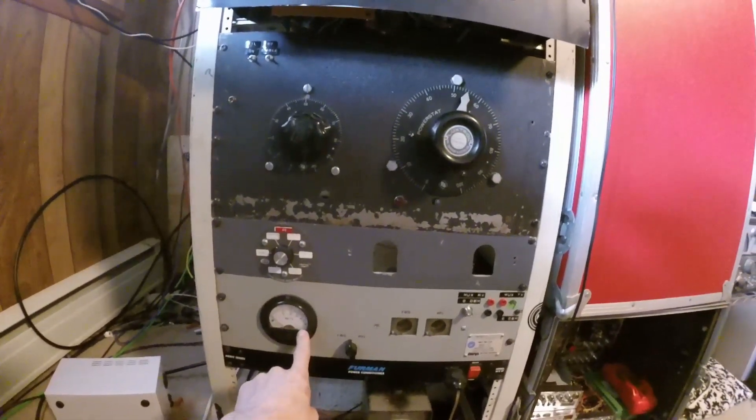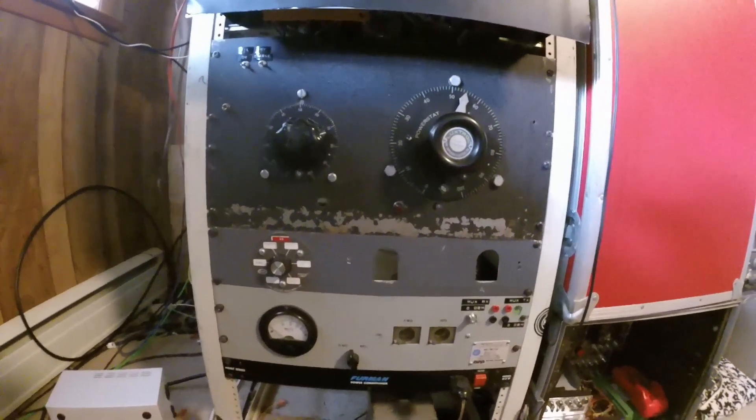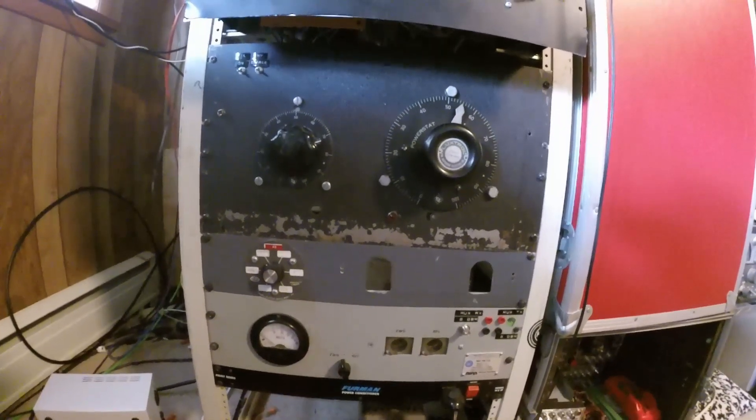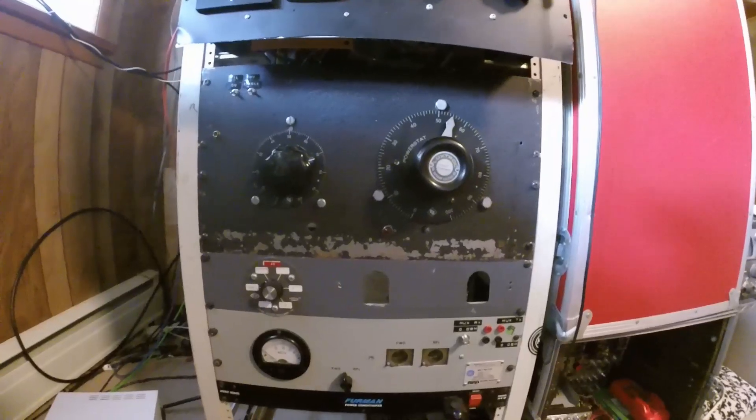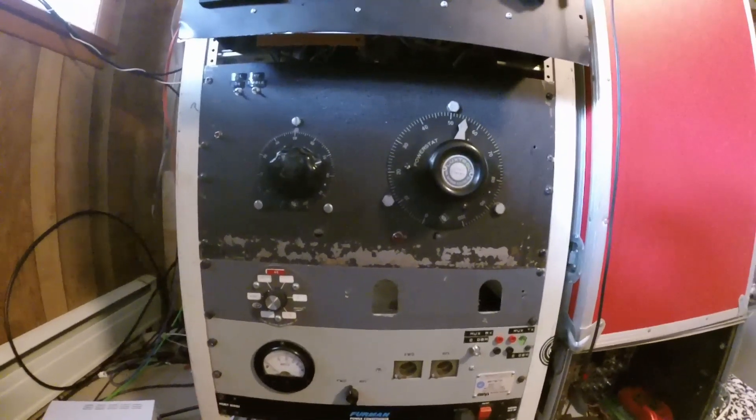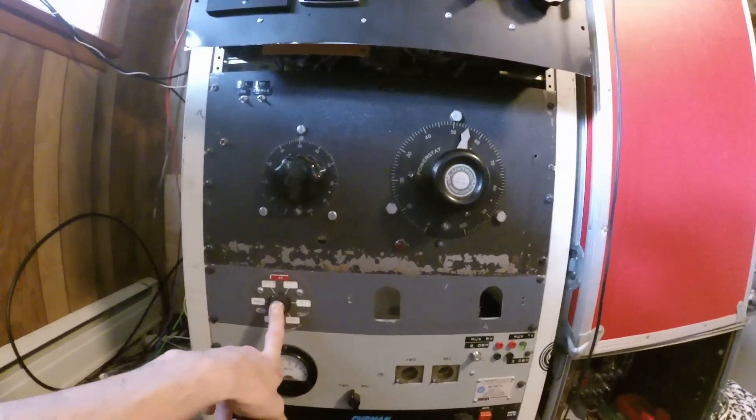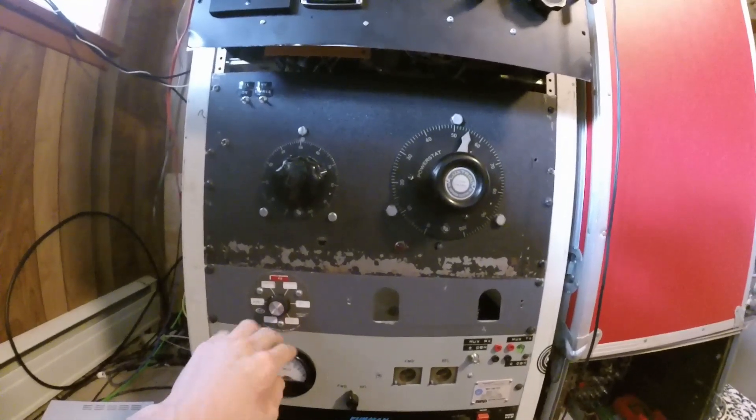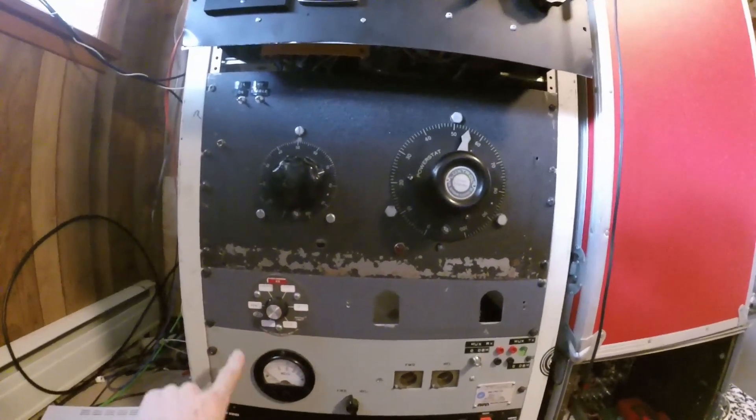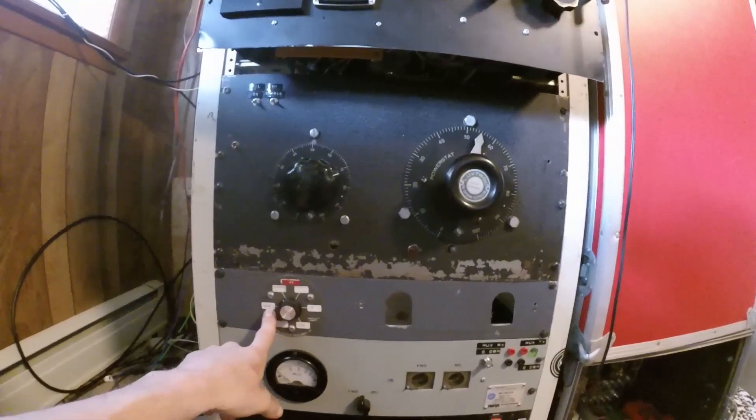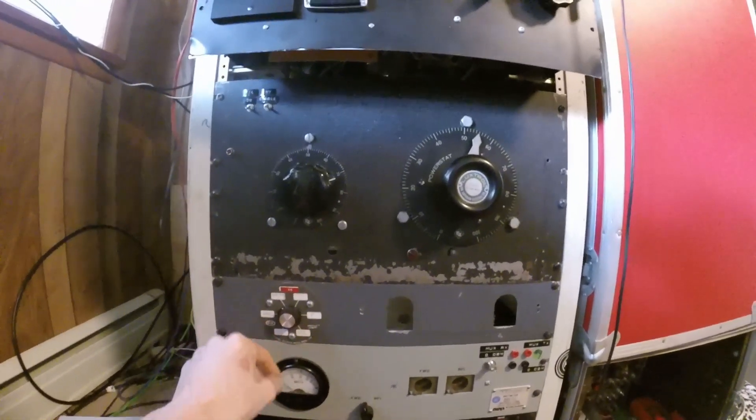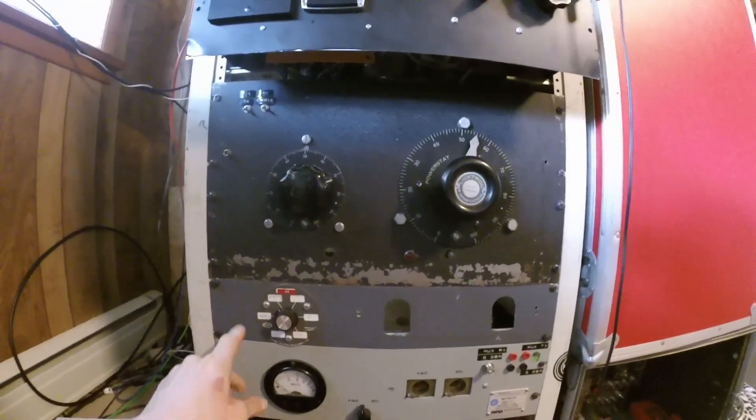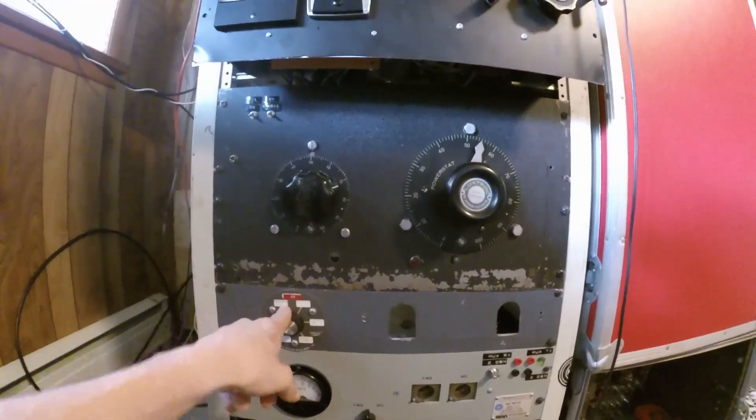Starting at the bottom, we have some metering that I honestly don't use right now. This was more a factor when I was operating out of this room. Since I moved my operating position into the other room, I really don't use it anymore. Above that is the main antenna switch that I use to switch transmitters.